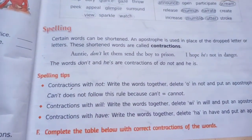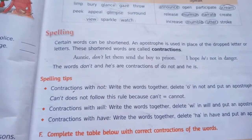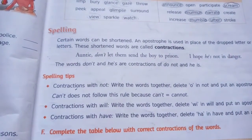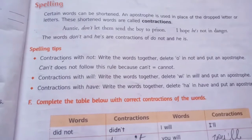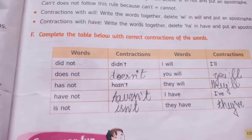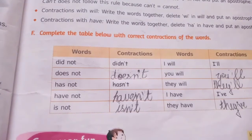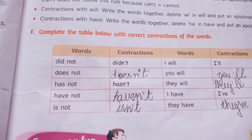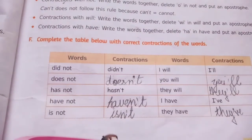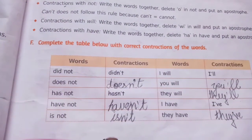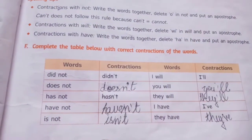Contractions means short form. An apostrophe is used in place of the dropped letter or letters — these shortened words are called contractions. For example: can't means cannot, don't means do not. Did not → didn't. Does not → doesn't. Has not → hasn't. Have not → haven't. Is not → isn't. I will → I'll. You will → you'll. They will → they'll. I have → I've. They have → they've. Keep a check on the spellings.